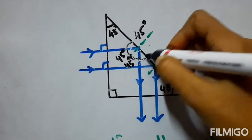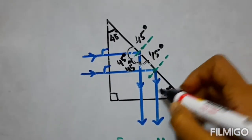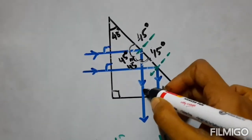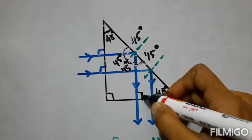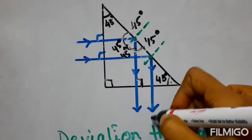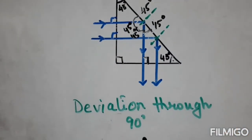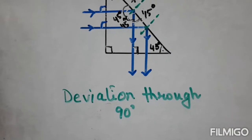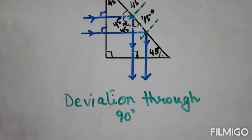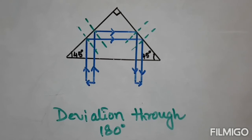We get the angle of reflection as 45°. If this is 45°, this will also be 45°, making this 90°. That means the reflected ray strikes the third surface at 90° and passes undeviated. The total deviation is through 90°. This application is found in a periscope of a submarine to see a brighter image.